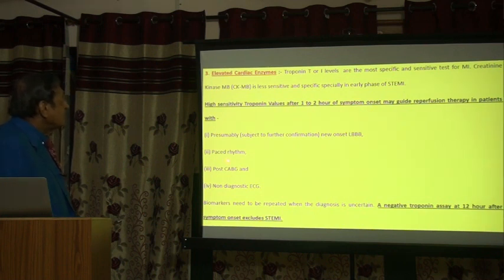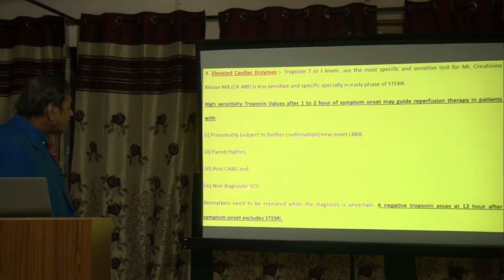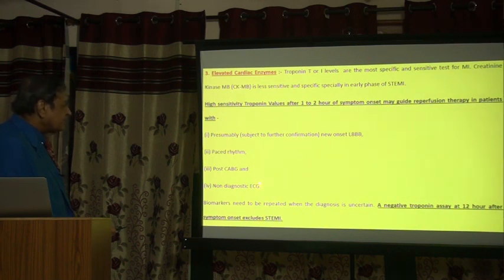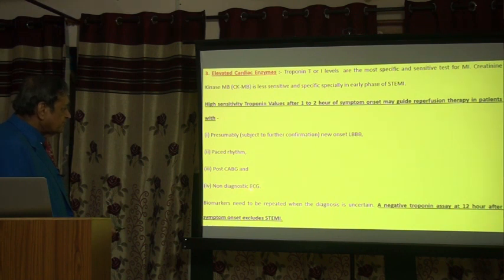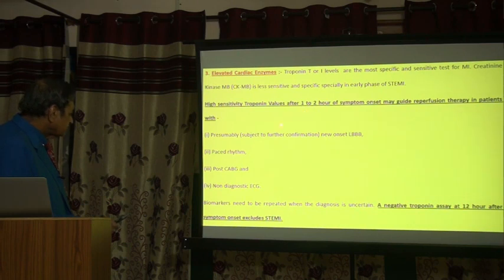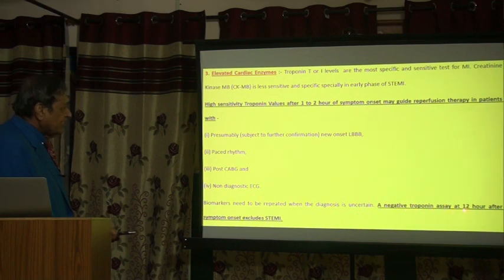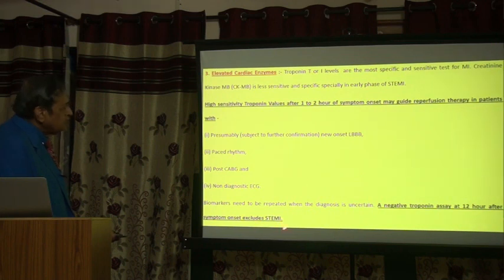In pace rhythm, if high sensitivity troponin is elevated after 1 to 2 hours, reperfusion therapy can be started. In post-CABG patients with non-diagnostic ECG, remember ECG can be normal in triple vessel disease also. If non-diagnostic and you see signs and symptoms of STEMI, go for high-sensitivity troponin. Biomarkers need to be repeated when the diagnosis is uncertain. A negative troponin assay at 12 hours after symptom onset excludes STEMI.